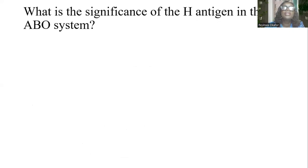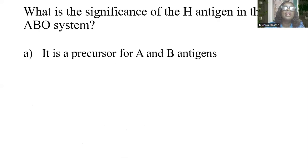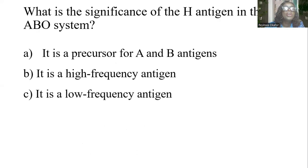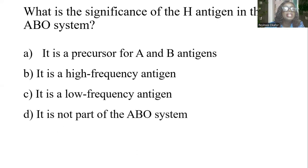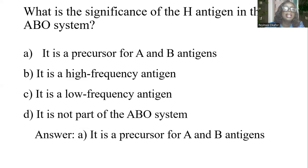What is the significance of the H antigen in the ABO system? A) It is a precursor for A and B antigens. B) It is a high-frequency antigen. C) It is a low-frequency antigen. D) It is not part of the ABO system. The answer is A: it is a precursor for A and B antigens.